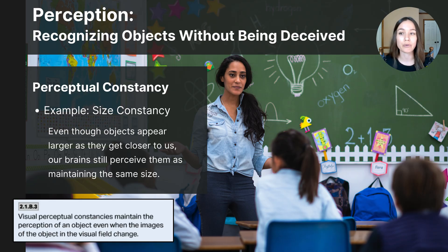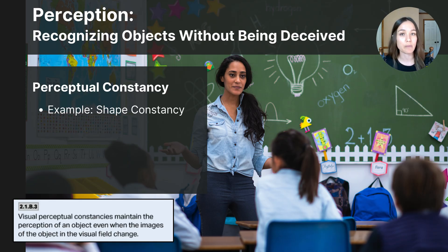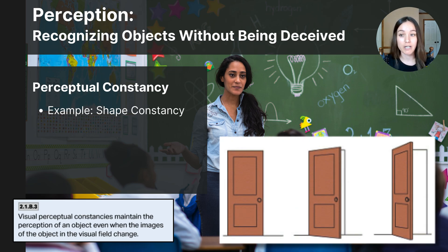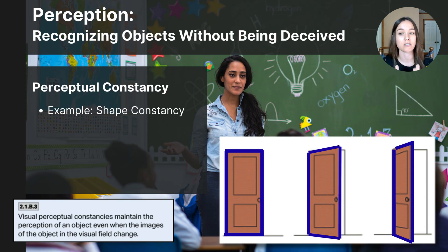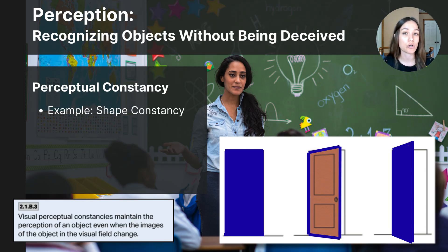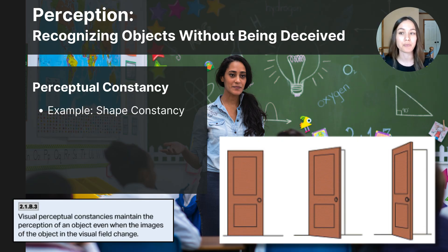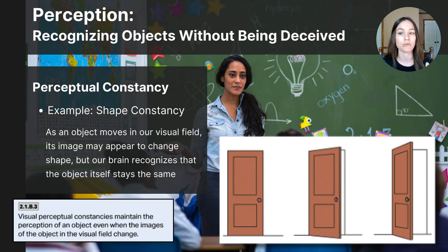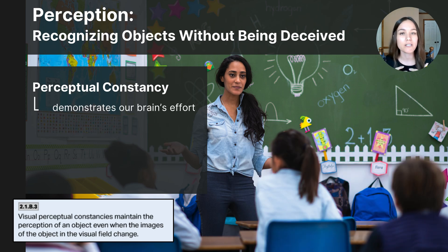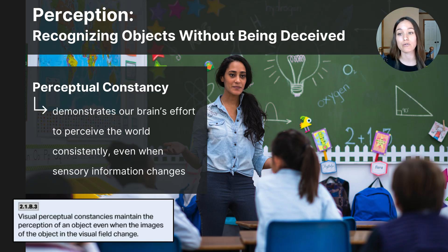Objects in your environment will not only change size depending on their distance, but also change shape depending on their angle. Notice how a door, as it opens, has visual angles that change and the rectangle begins to transform into what appears to be a trapezoid. But because your brain knows what doors are like and how they work, you are not fooled by the shifting angles and still interpret the door's shape as a rectangle regardless of the changing visual input. Perceptual constancies like shape and size constancy help our brains construct stable perceptions even when sensory information changes.